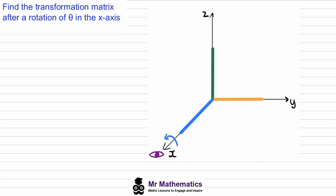Before we begin we need to understand the coordinates for the i, j, and k unit base vectors. We know that i travels from the origin by one unit along the x-axis with coordinates (1, 0, 0). j travels one unit along the y-axis with coordinates (0, 1, 0), and k travels one unit along the z-axis with coordinates (0, 0, 1).